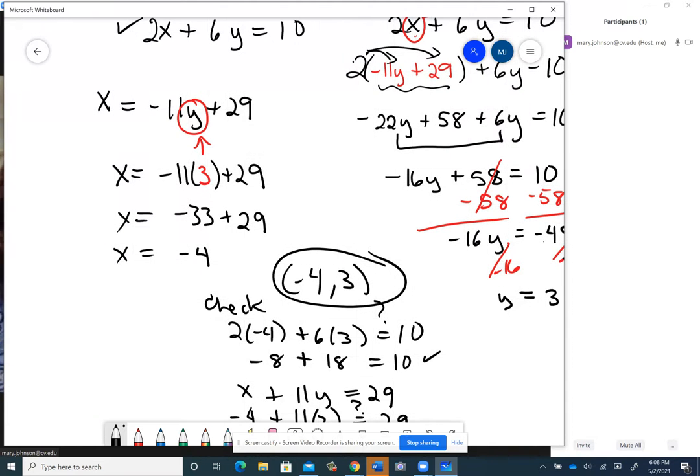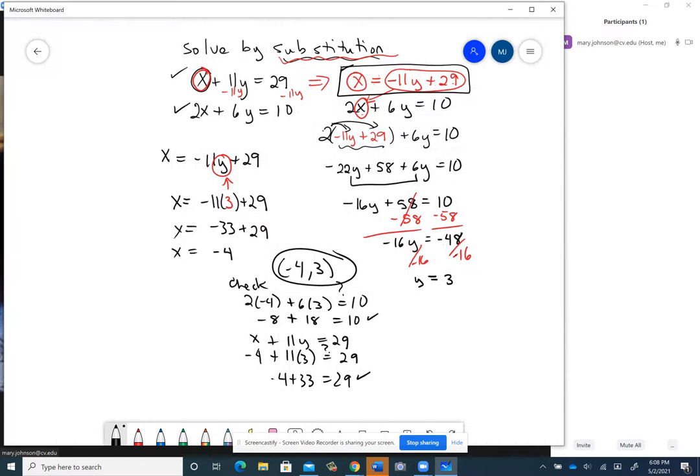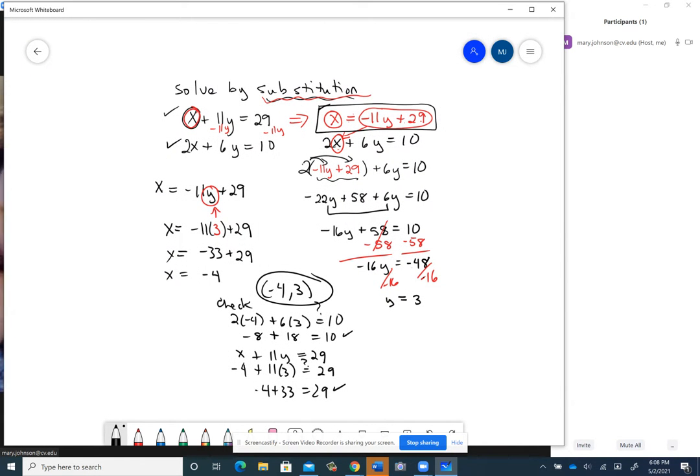So that process that we just did, let me squish this so you can see the whole thing. That process right there is solving by substitution. Now sometimes one of the variables will already be on the side by itself. But if it's up to you, make sure you pick the variable that's easiest to isolate, easiest to get by itself. So because that had an understood 1 in front of it, that's why I picked the x in the first equation.